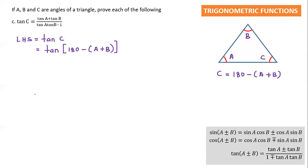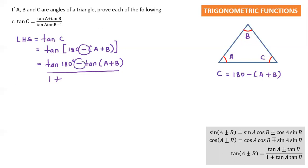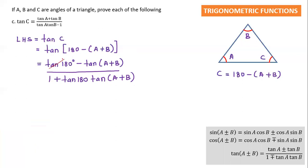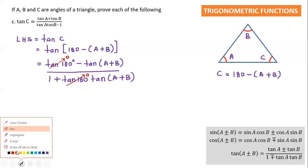Using the tangent subtraction formula: tan[180 minus (A+B)] equals [tan 180 minus tan(A+B)] over [1 plus tan 180 times tan(A+B)]. Be careful — when the sign is negative in the formula, the bottom becomes positive. Now, tan 180 equals 0, so substituting: the top becomes 0 minus tan(A+B) = negative tan(A+B), and the bottom becomes 1 plus 0 which is just 1.